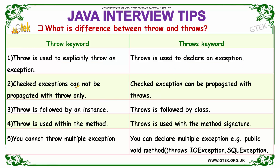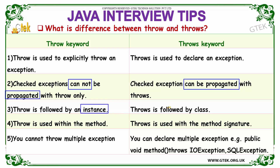Checked exceptions cannot be propagated with throw only, whereas checked exceptions can be propagated with throws. Throw is followed by an instance, whereas the throws keyword is followed by a class. Throw is used within a method, whereas the throws keyword is used with the method signature.